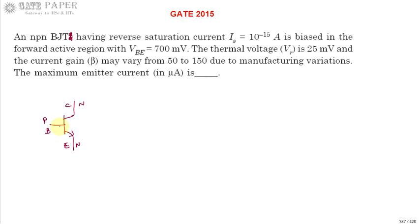Every BJT has two PN junctions: one is emitter-base junction JE and collector-base junction JC. The BJT is biased in forward active region, meaning emitter-base junction is forward biased and collector-base junction is reverse biased. Now this BJT can act as an amplifier.